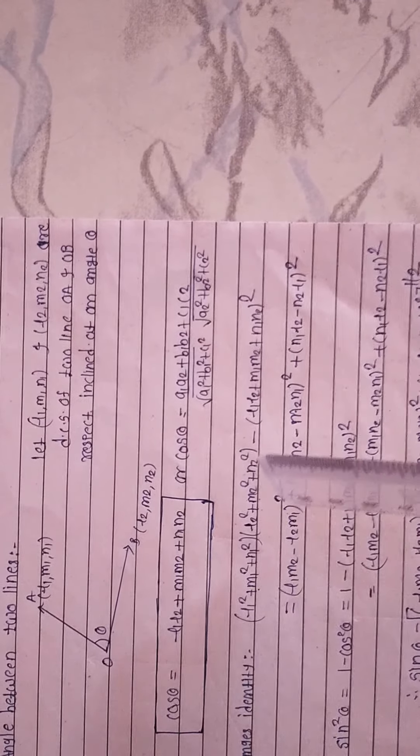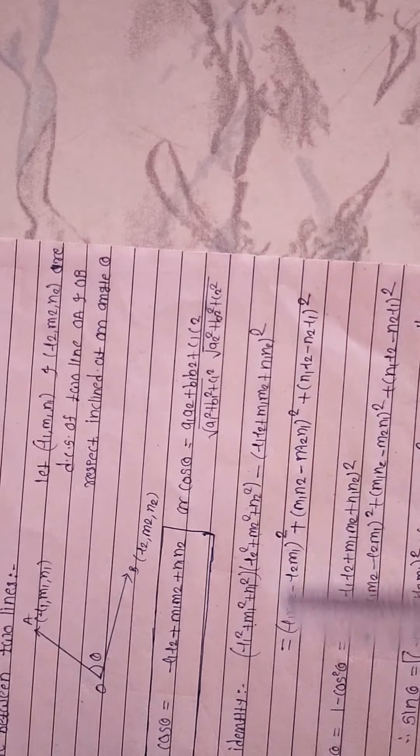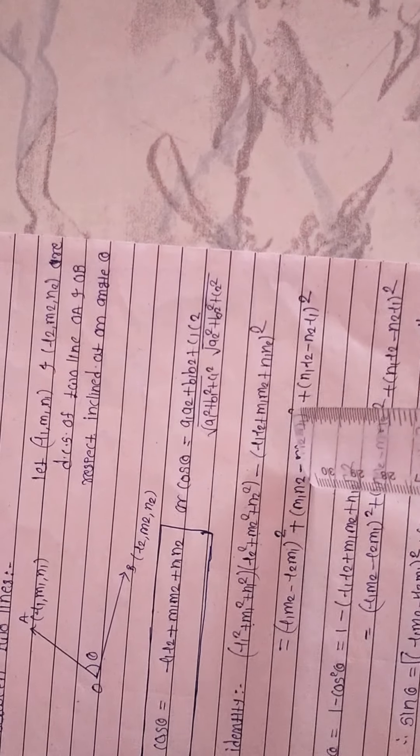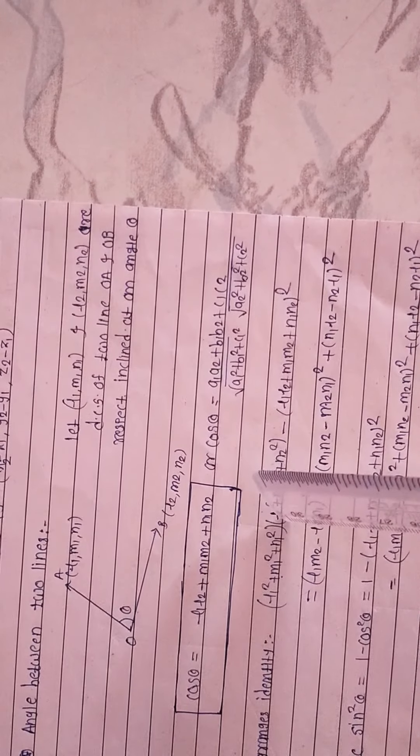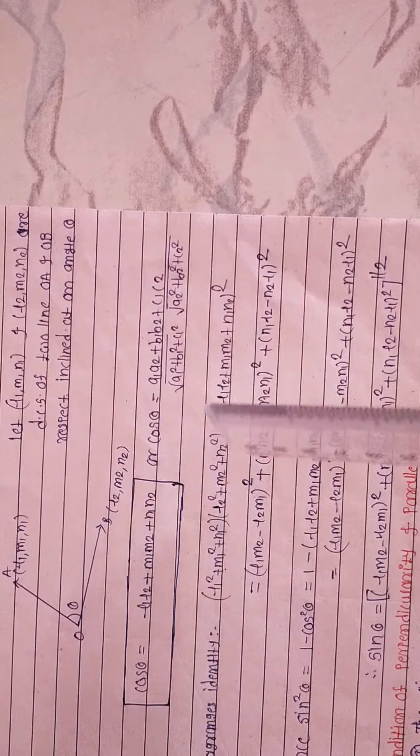Next is Lagrange's identity. We have DCs (l₁, m₁, n₁) and (l₂, m₂, n₂). So (l₁² + m₁² + n₁²)(l₂² + m₂² + n₂²) − cos²θ equals (l₁m₂ − l₂m₁)² + (m₁n₂ − m₂n₁)² + (n₁l₂ − n₂l₁)². Since sin²θ = 1 − cos²θ, and l₁² + m₁² + n₁² = 1 and l₂² + m₂² + n₂² = 1 (from the DC property), the product is 1. Therefore, from Lagrange's identity, sin θ = √[(l₁m₂ − l₂m₁)² + (m₁n₂ − m₂n₁)² + (n₁l₂ − n₂l₁)²].